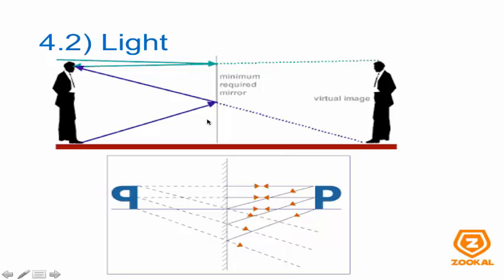Now I'm going to show how to draw a virtual image. A virtual image is simply the image that you see in the mirror. When you have a virtual image, the distance between the person and the mirror is equal to the distance between your virtual image and the mirror. And everything is proportional.